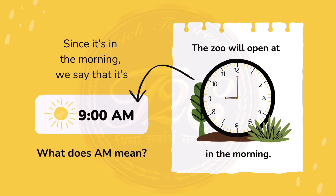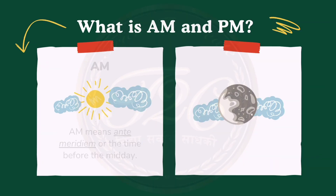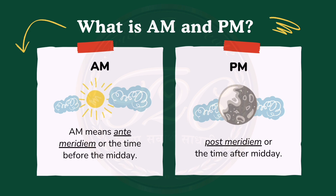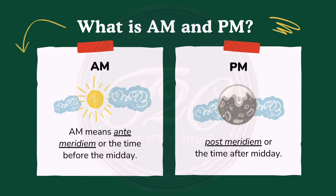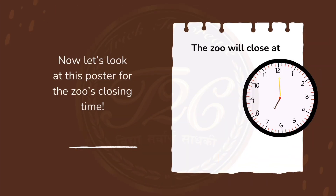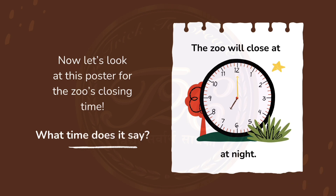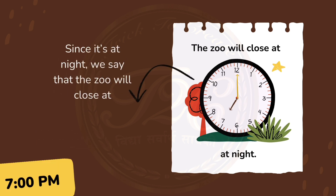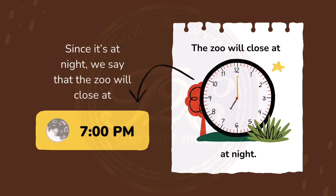What is a.m.? A.m. is ante-meridiem, that is before the midday, and p.m. is post-meridiem, after the midday. Now let's look at the poster. It is the closing time of the zoo at night — that is 7 at night. So we will say it is 7 p.m. because it is after the midday.